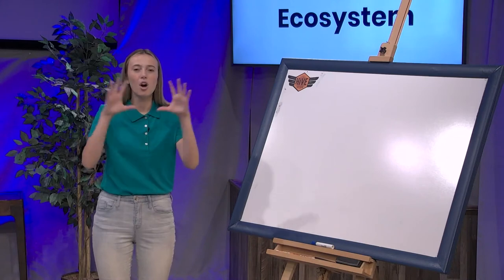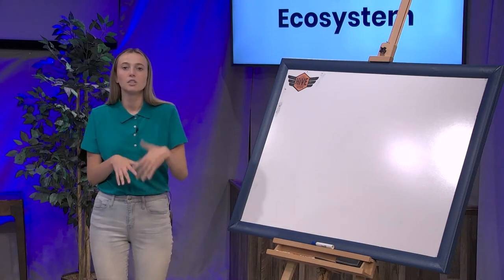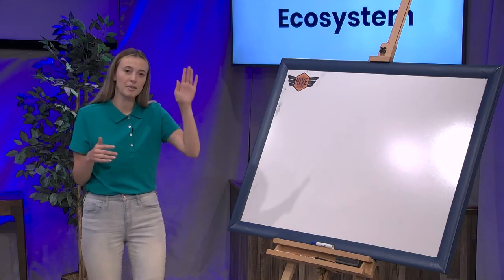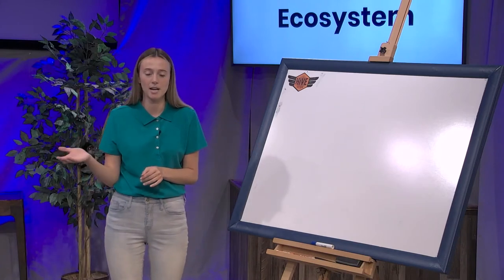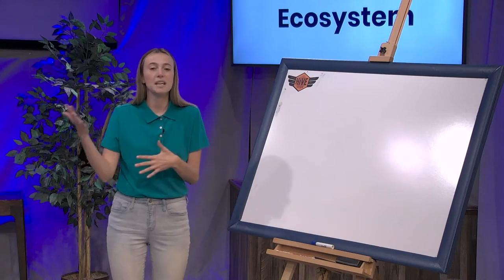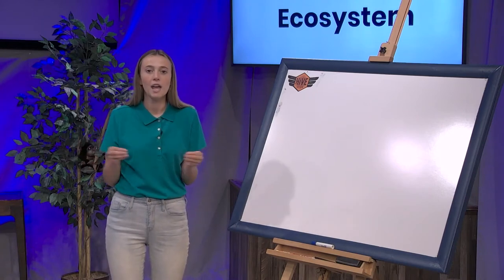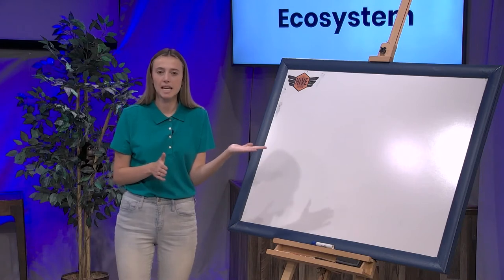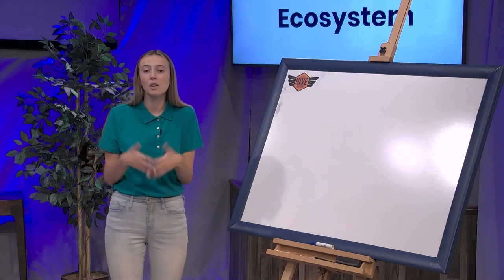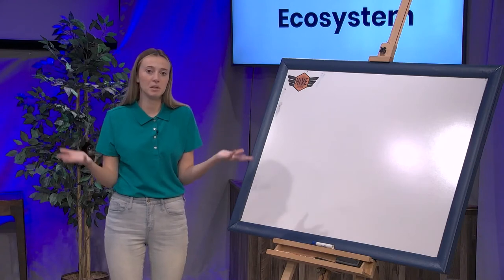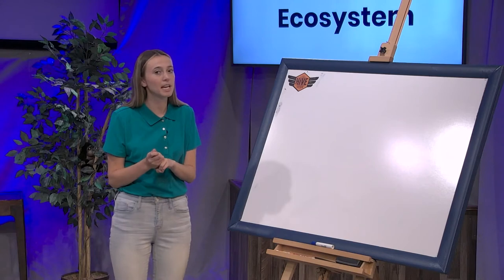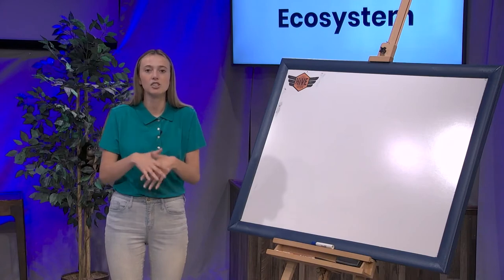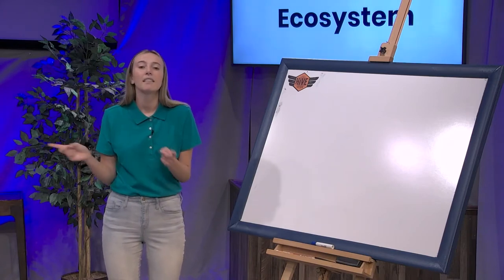A biome clumps all the similar ecosystems up into one group. We're going to be talking about biomes today and might mention a few ecosystems. A desert in the United States and a desert in Africa are going to be different, but they'll have a lot of similarities — the temperature might be the same, and they might share some similar animals. A biome clumps those together and just calls them a desert.